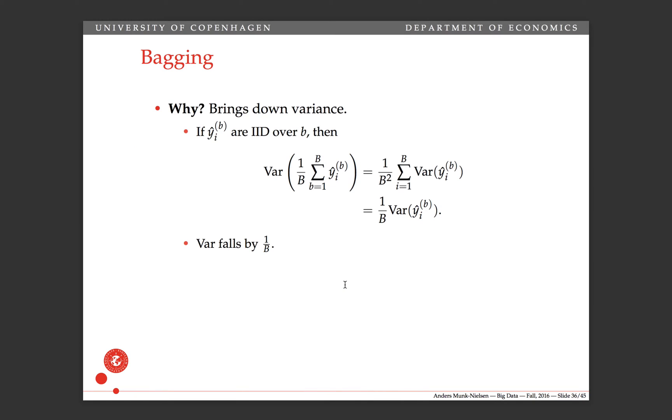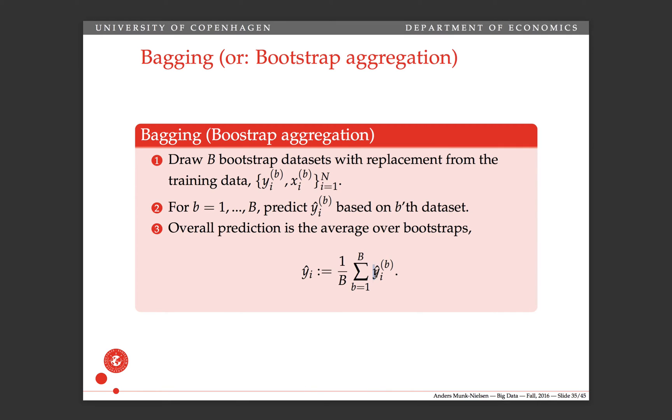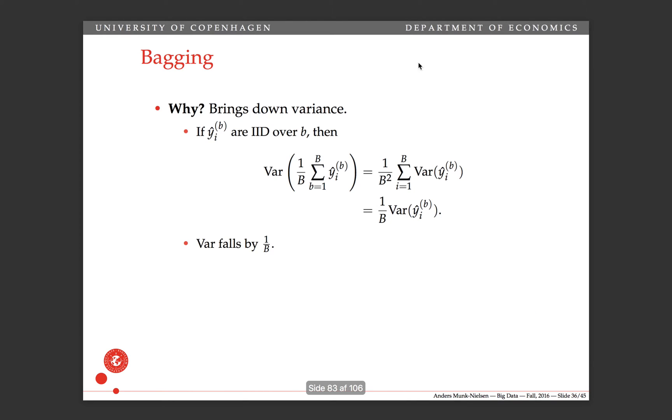So why is bagging a good idea? Well, let's look at, first off, if each of these Y hats, if they're all unbiased estimates, then the expectation of this average over B is going to also be equal to the true expectation. So that's also going to be unbiased because it's just an average of unbiased estimators. So that's good.